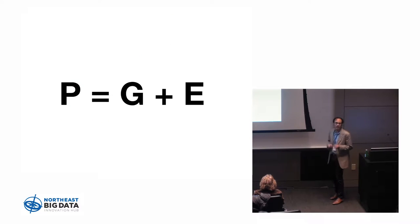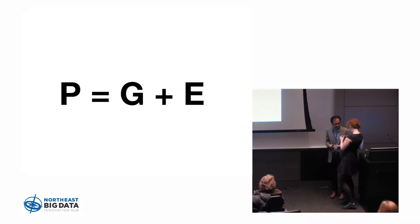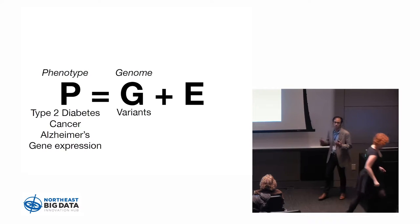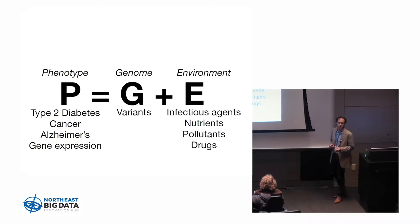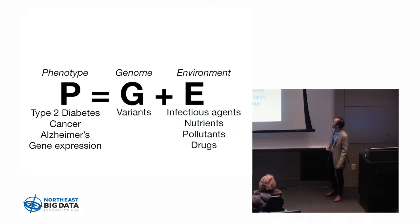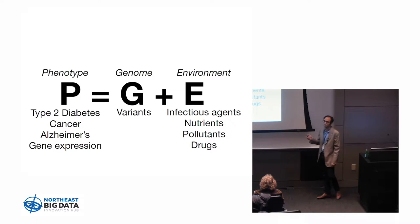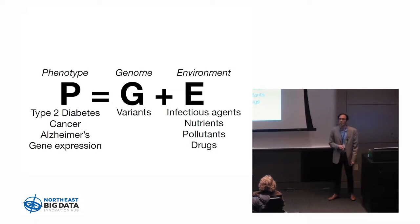As I like to tell my intro genetics students, phenotypes or disease are a function of things that come down from mom and dad — our genetics or genomic variants — and environmental exposures: things we're exposed to every day, like infectious agents, nutrients, diet, pollutants, and drugs. At the end of the day, in biology and biomedicine, we want to solve this equation to figure out how to position risk for disease.